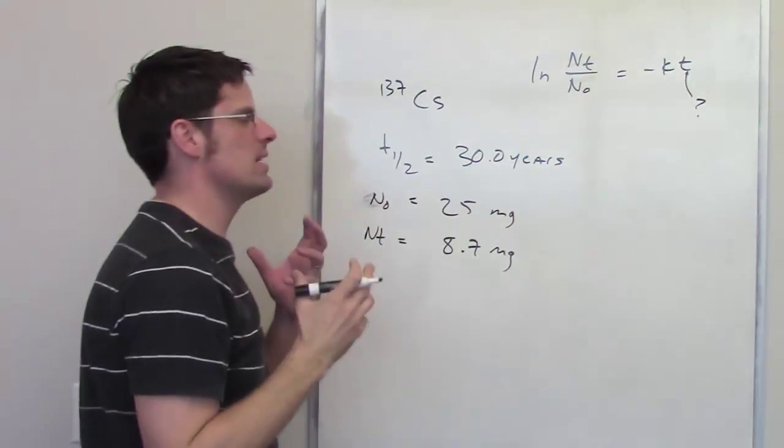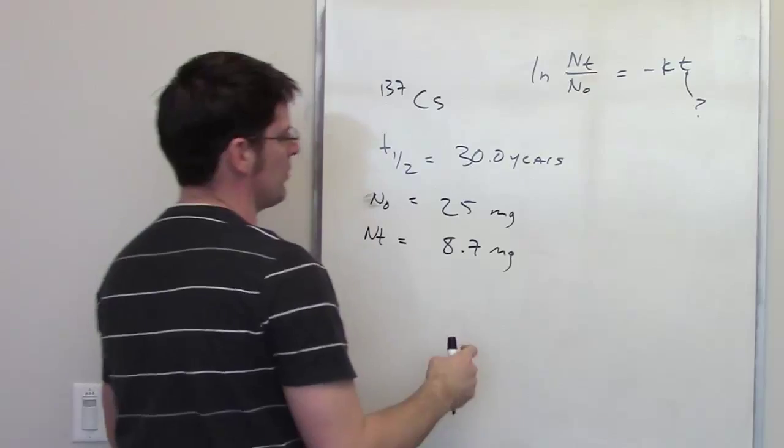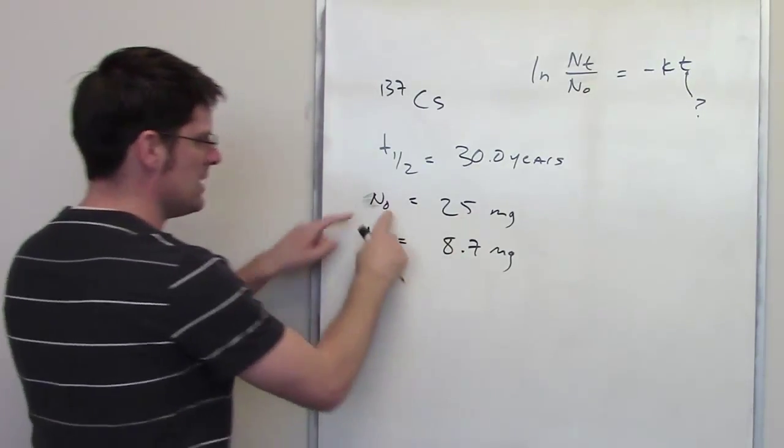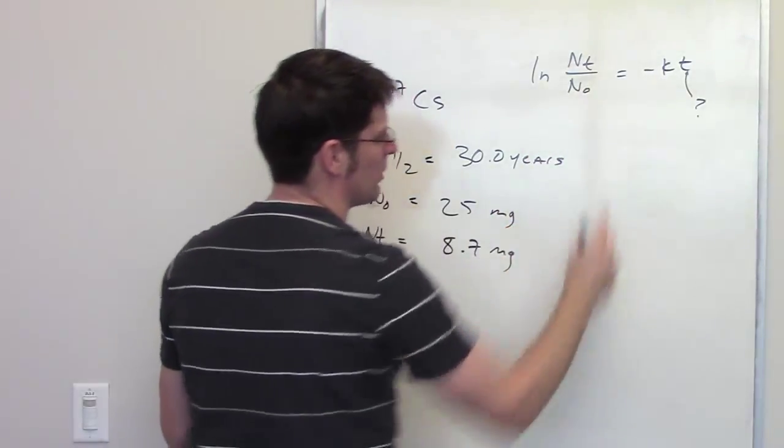So once again, we're trying to figure out how much time has elapsed in order for 25 milligrams to decay down to 8.7 milligrams. n sub 0, n sub t, I can plug those right into that equation. The big trick right here is the k. How do I figure out what k is?